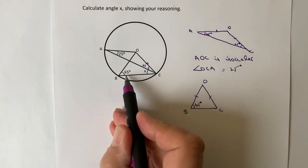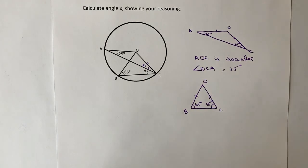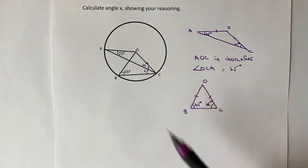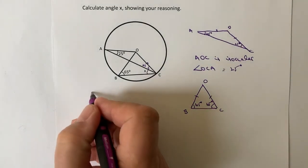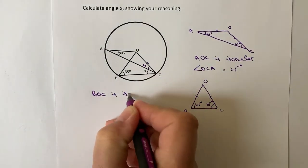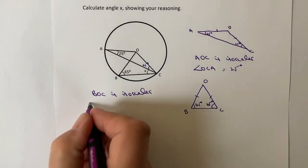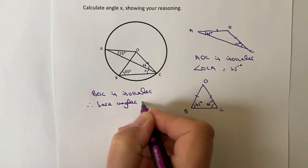So what we also know is that this is 65 degrees, which is this one here. We also know that this other angle, this side here, is actually also 65 degrees. Now, it's made up of 25 plus X. So we're going to use that bit of information to be able to figure out the value of X. So again, I'm going to write it in the way that they want it. They would want something along the lines of BOC is isosceles, and therefore base angles are the same.